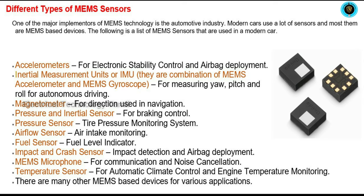The IMU is used for measuring yaw, pitch and roll for autonomous driving. The magnetometer is used for direction in navigation. The pressure and inertial sensor is used for braking control. The pressure sensor is used in the tire pressure monitoring system.